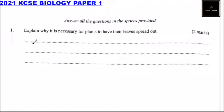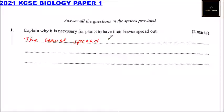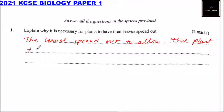It is important for the leaves to spread out so that they can maximize photosynthesis. The leaves spread out to allow the plant to maximize photosynthesis.